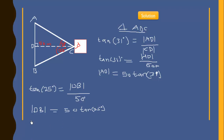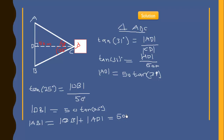The height of the tower AB equals DB plus AD, which equals 50·tan(25°) plus 50·tan(31°).